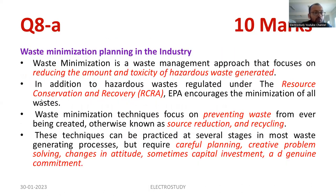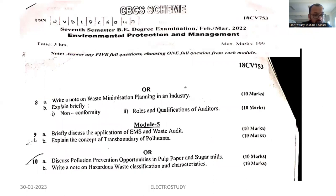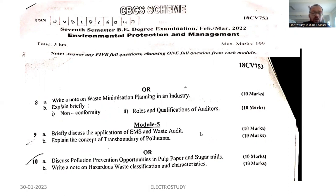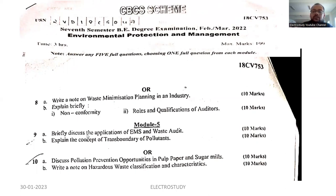We have completed question number 8A and 8B. Moving on to question number 9A: briefly discuss the applications of environmental management system and the waste audit. Five plus five — applications of EMS carries five marks, waste audit comprises five marks, total ten marks. Don't worry about that — you can manage within two to three pages. You have to highlight the important points and underline them so the evaluator can easily follow the topic.